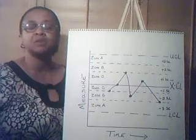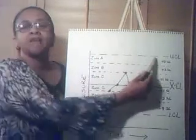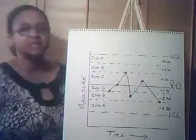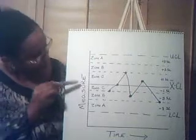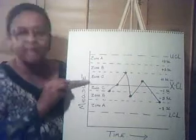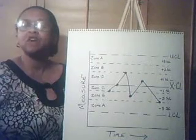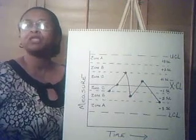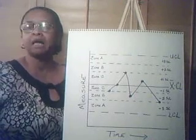Number two is the upper control limit. This is above the center line, and it's often called the plus-three sigma line.